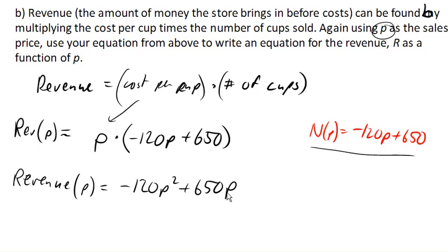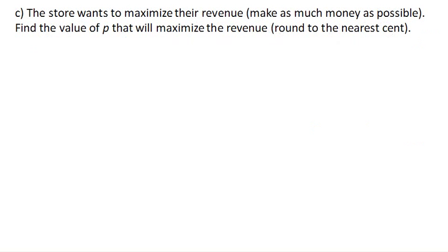So taking that now, we can ask the question, the store wants to maximize their revenue, make as much money as possible. Find the value of P that will maximize the revenue. So we have that revenue as a function of P is negative 120p squared plus 650p.